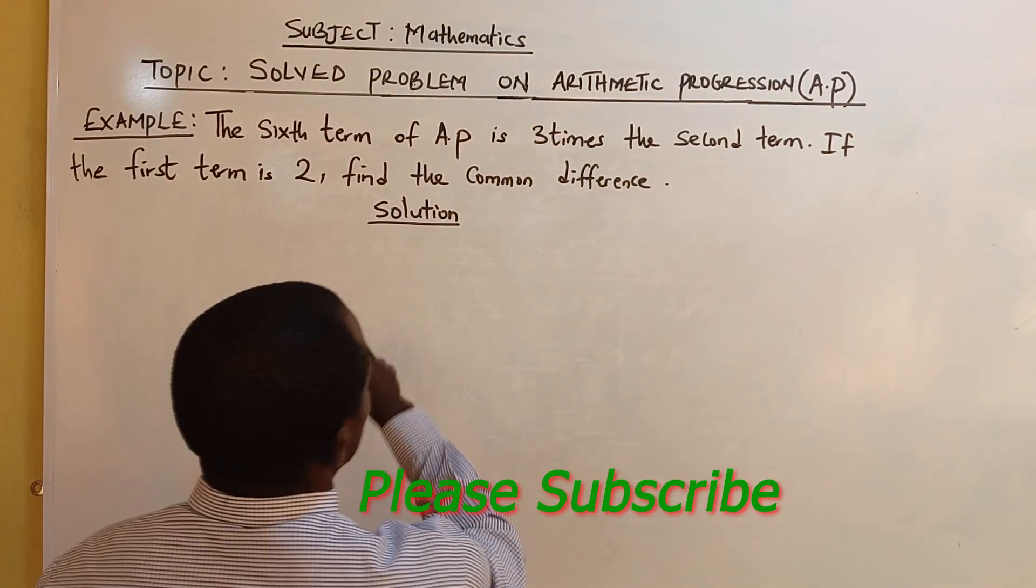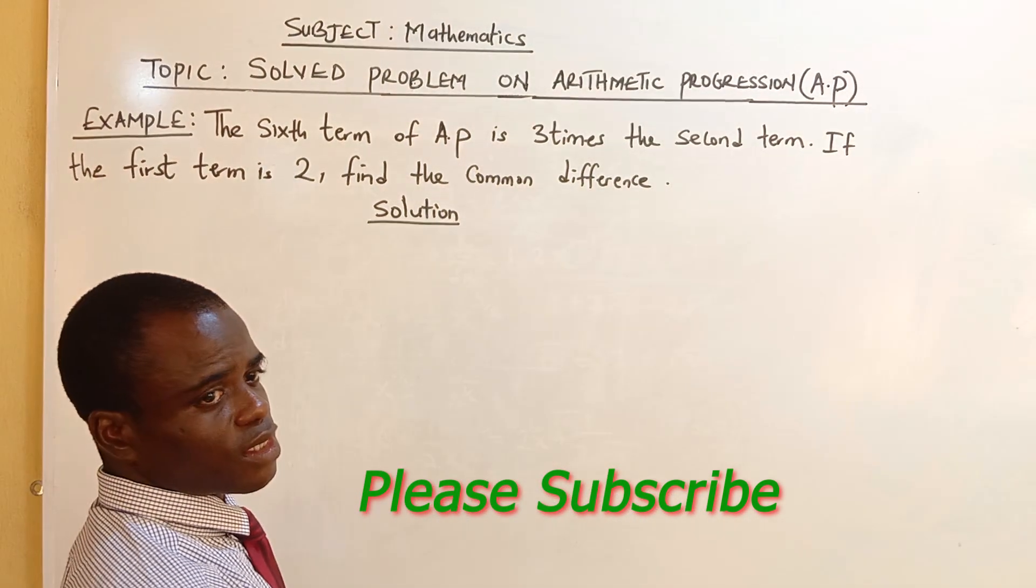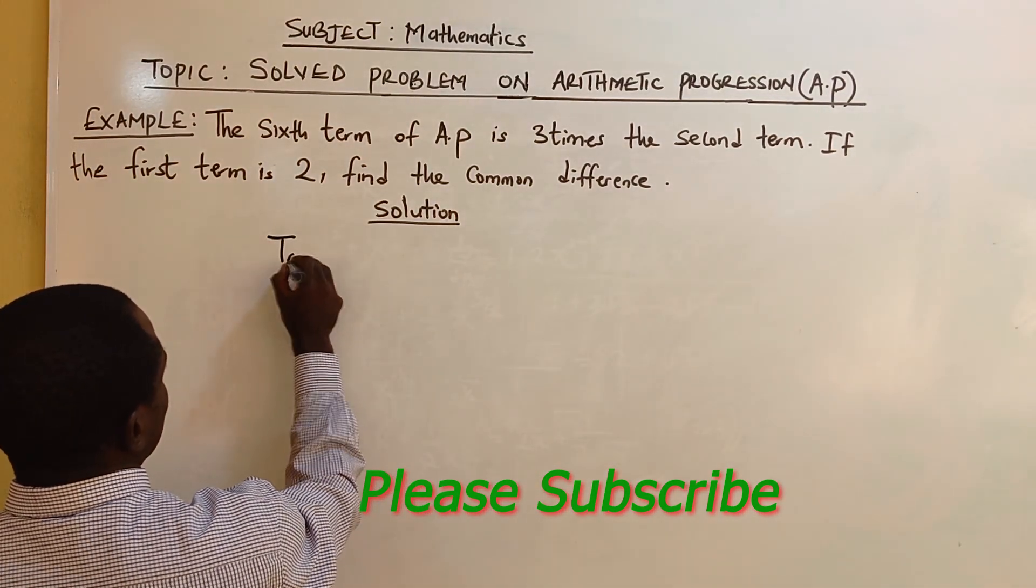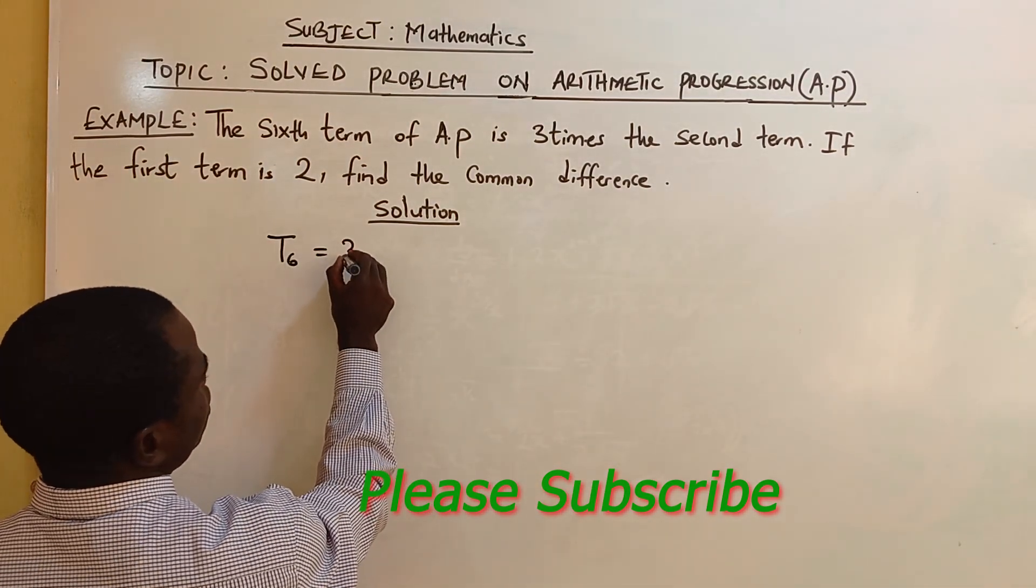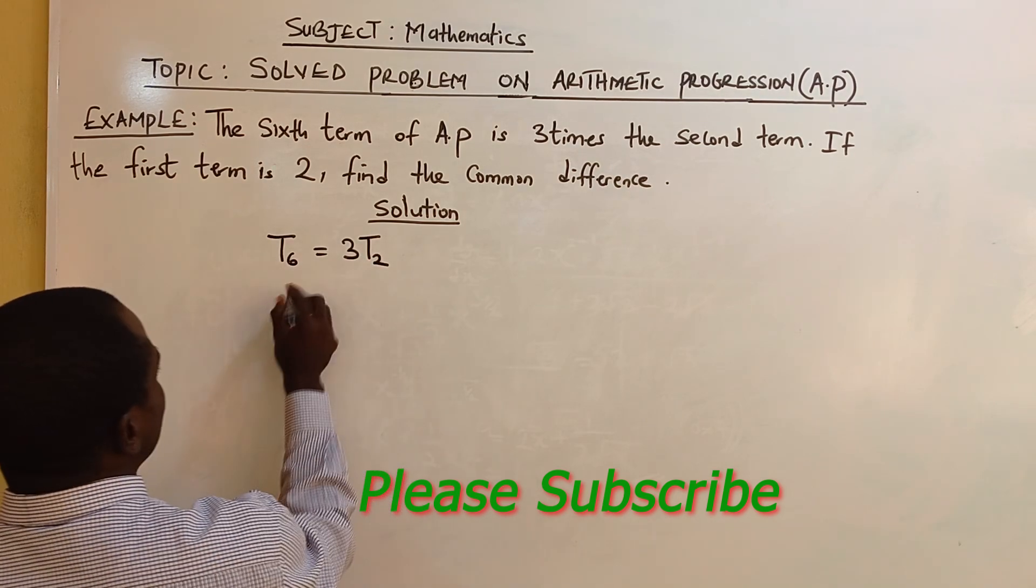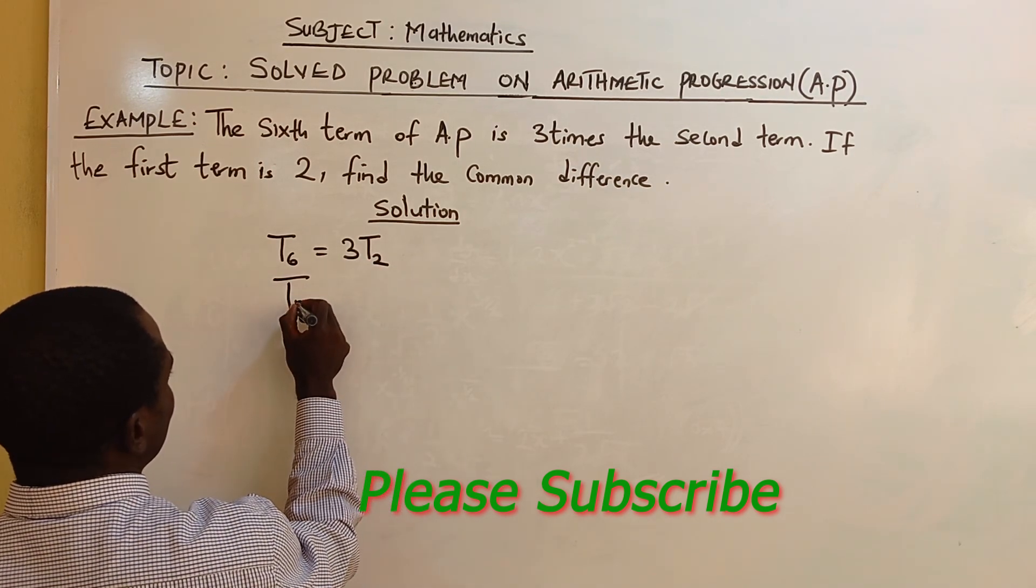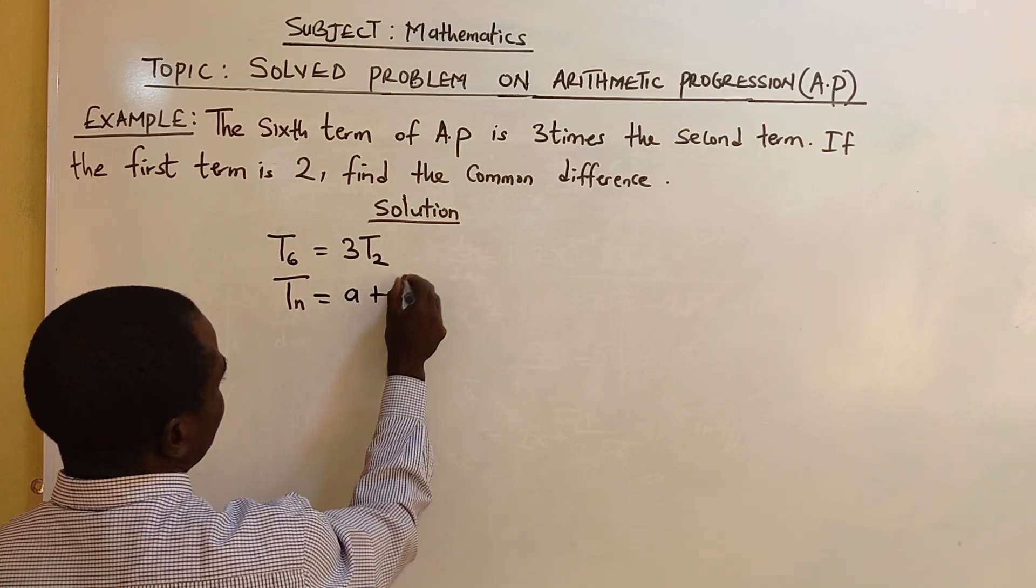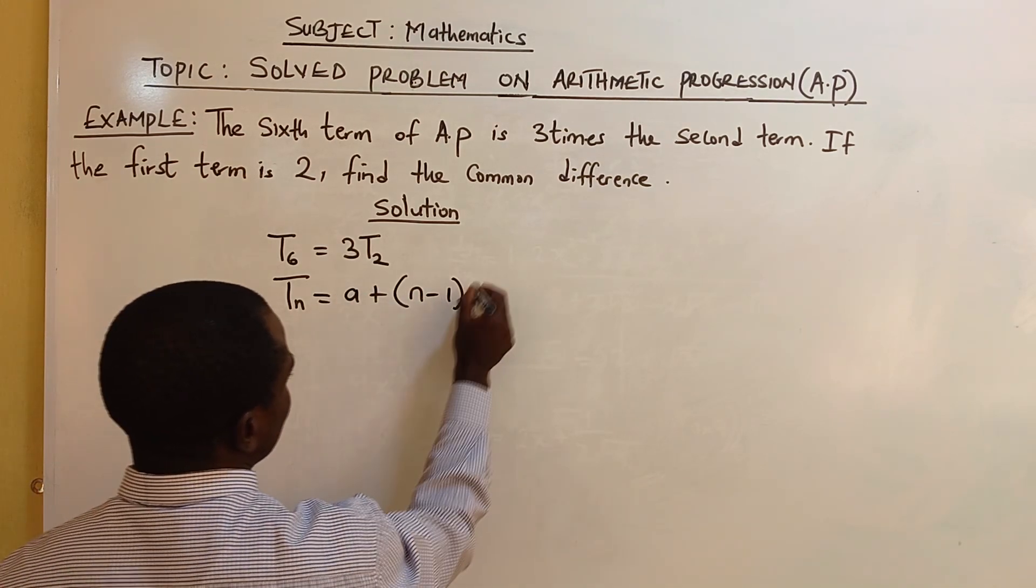We said the sixth term of AP is 3 times the second term. What they are saying is that T6 is equal to 3 times the second term. And don't forget the general formula of number of terms under AP is Tn equals A plus, into bracket, N minus 1, D.